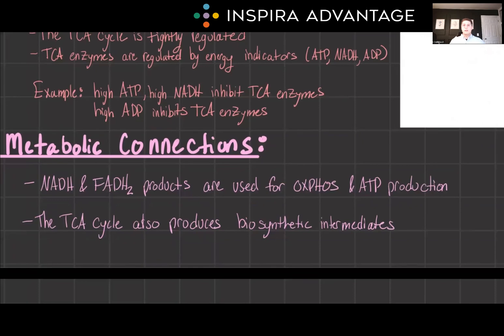The TCA cycle is interconnected with overall metabolism. Its products, NADH and FADH2, are crucial for ATP production in oxidative phosphorylation at complexes 1 and 2, respectively. The cycle also produces metabolic intermediates used in other pathways, highlighting its role in both energy and biosynthetic metabolism.